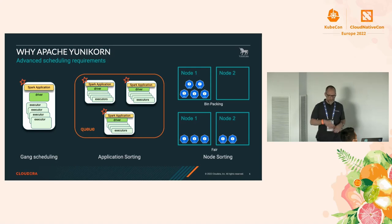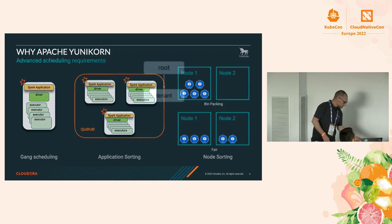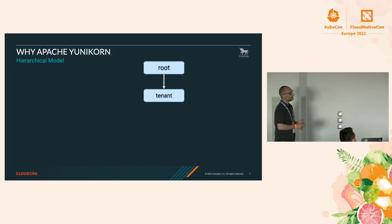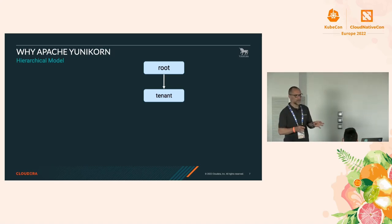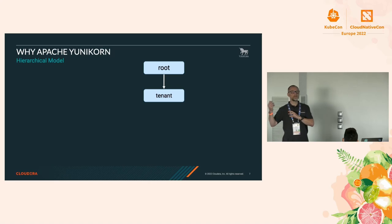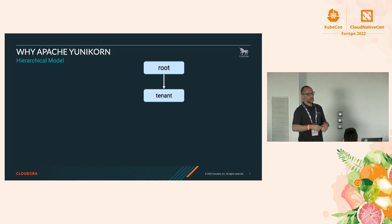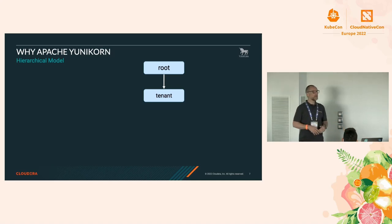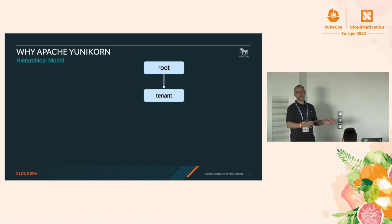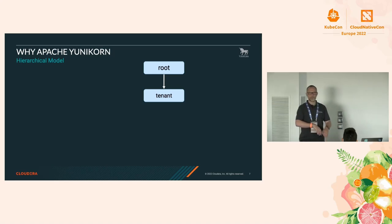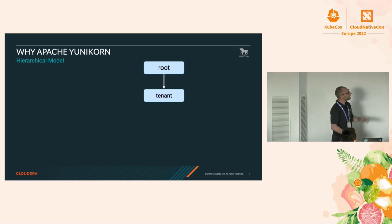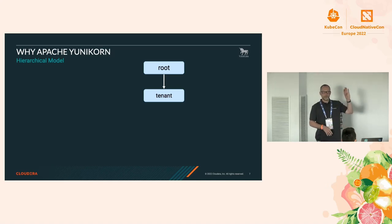In the previous slides I stepped quickly over the possibilities in the hierarchical queue system, so let's dive in a bit more. I'm going to take a really simple example - you can make it as difficult as possible. We're coming from the Yarn perspective and we've had customers running with hundreds of queues, five or six levels deep, with all kinds of different combinations. All that is also possible within Unicorn, but for now we take a simple setup: a root queue with one tenant queue underneath.